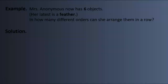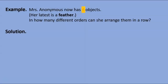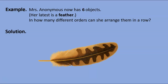Suppose she now has six objects, the latest of which is a feather. In how many ways can she arrange them? She has six options for the first position, five for the next, and so on down to one option for the last slot. Multiply them out, and you find she can arrange her half dozen objects in seven hundred and twenty different orders.